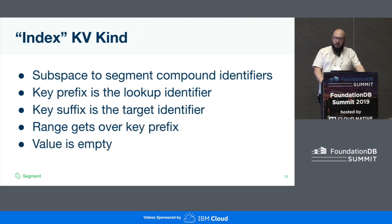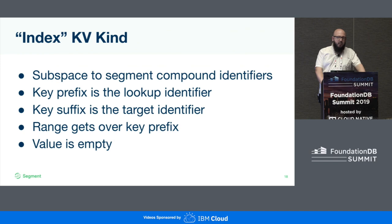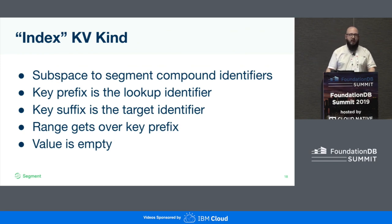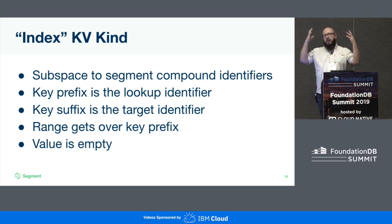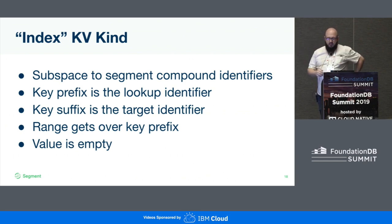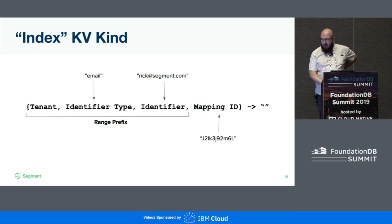We also have index KV kinds. We use the subspaces to segment the compound identifiers. We generally look up by key prefix, so we use get ranges for these. The suffix of the key is the actual target — the thing we're mapping to. So the prefix will have multiple targets it's identifying in the system, and the value is usually empty.